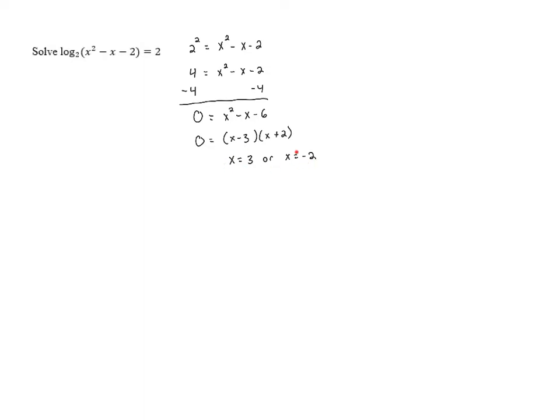We need to make sure that when we substitute these in to the inside of the logarithm, the result is positive. So let's take a look at what happens when we plug in x equals 3. We've got 3 squared minus 3 minus 2. That's 9 minus 3 minus 2. 9 minus 3 is 6. Minus 2 is 4. And that is positive, so we know that that fits with the domain.